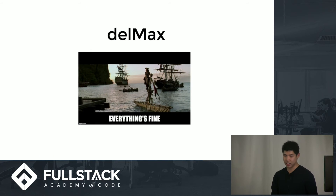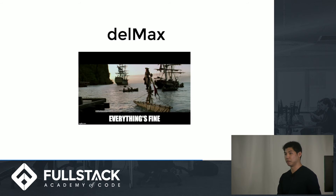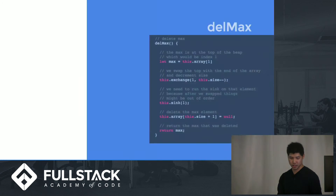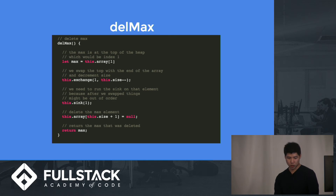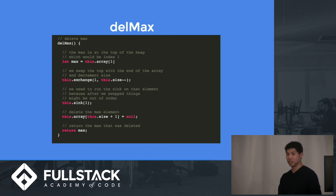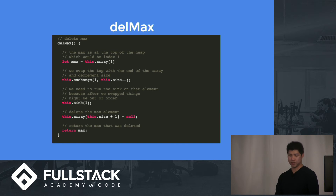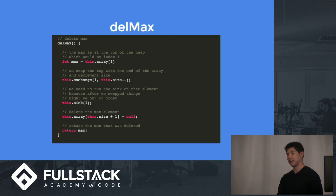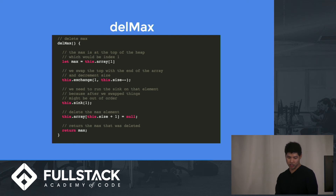The next function is delete max, which is when you actually want to remove the maximum element from the heap and priority queue. You know the max is at index 1, so you store that. Then you swap the top element at index 1 with the last element, decrement the size, and call sink to move the swapped element from index 1 down the heap to its proper place. Then you delete it by setting the value at the end to null, and return the max.